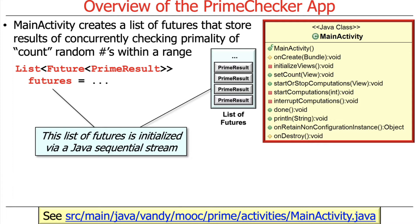We also have a list of futures to PrimeResults. When we talked about the executor service interface, we talked about how you can submit tasks and what you get back is a Future representing the result. We're going to submit a whole pile of prime candidate requests to our thread pool, get back futures for each submission, store those in a list of futures, and then use that list to get the results — redeem the results — using Java sequential streams.